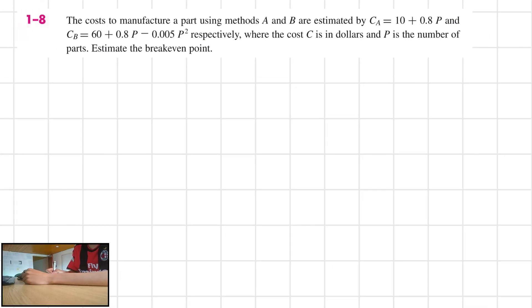Exercise 1-8. The costs to manufacture a part using methods A and B are estimated by, for example, in the case of A, CA equal to 10 plus 0.8P, and CB is equal to 60 plus 0.8P minus 0.005P squared, respectively, where the cost C is in dollars and P is the number of parts. Estimate the break-even point.